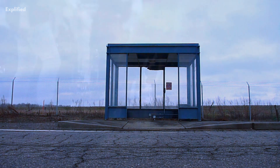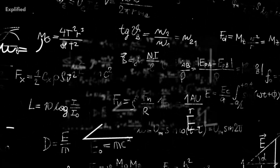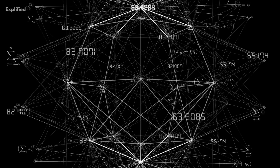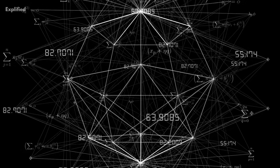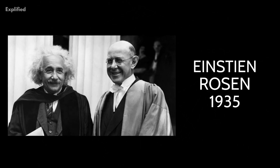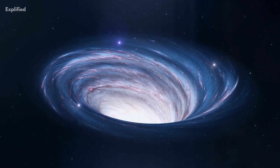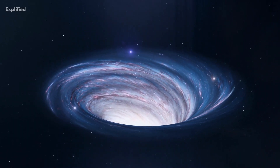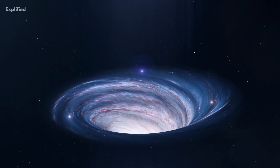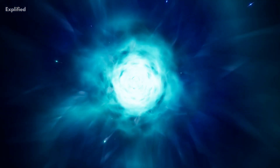Who discovered wormholes? Einstein and Rosen began with the mathematical solution of a black hole, which consists of a singularity — a point of infinite density — and an event horizon. Einstein and Rosen found the simplest possible wormhole solution in 1935, which is why wormholes are sometimes referred to as Einstein-Rosen bridges.